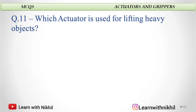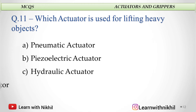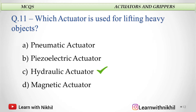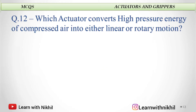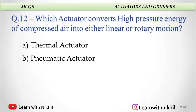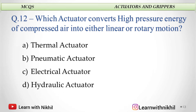Which actuator is used for lifting heavy objects? A. Pneumatic, B. Piezoelectric, C. Hydraulic, or D. Magnetic? For lifting heavy objects we always use hydraulic actuator. Which actuator converts high pressure energy of compressed air into either linear or rotary motion? Options: thermal actuator, pneumatic, electrical, or hydraulic. For compressed air we use pneumatic actuator.